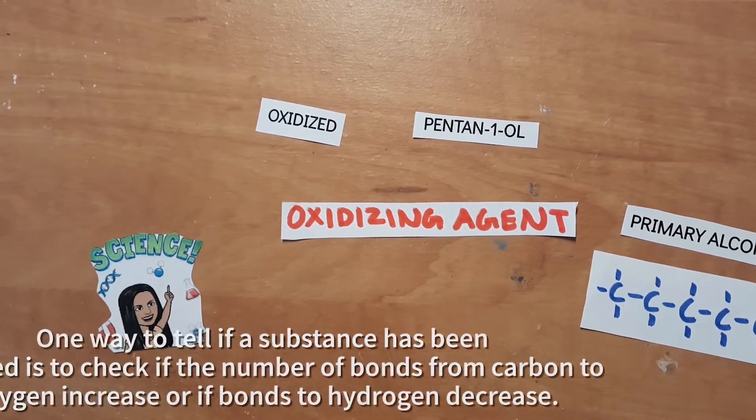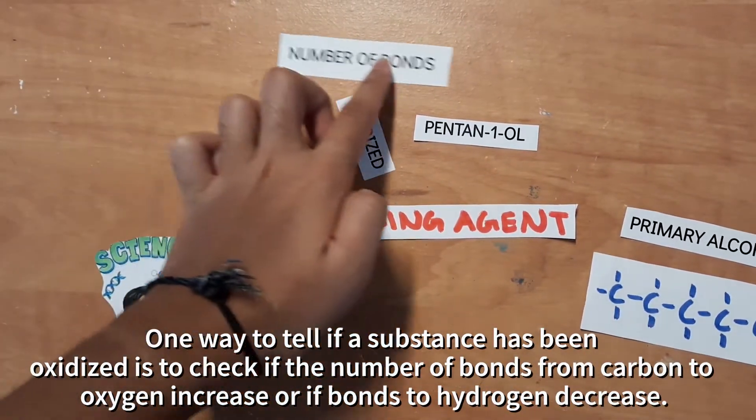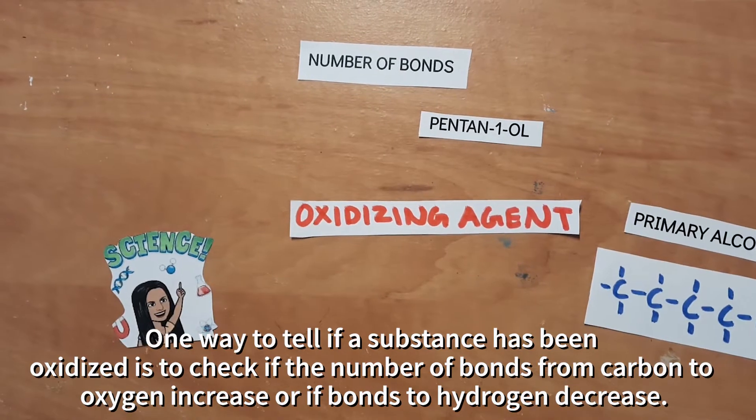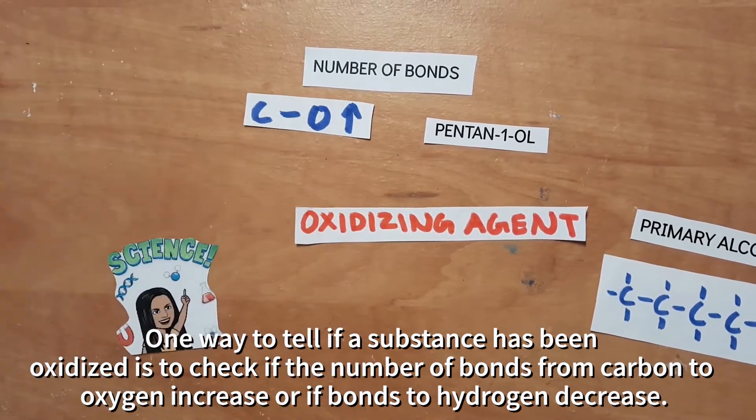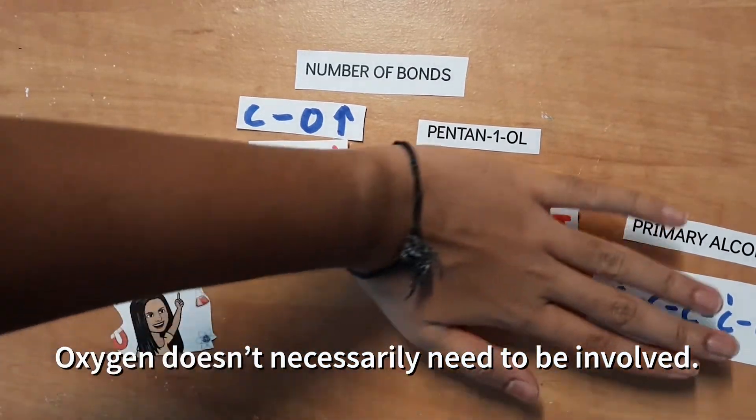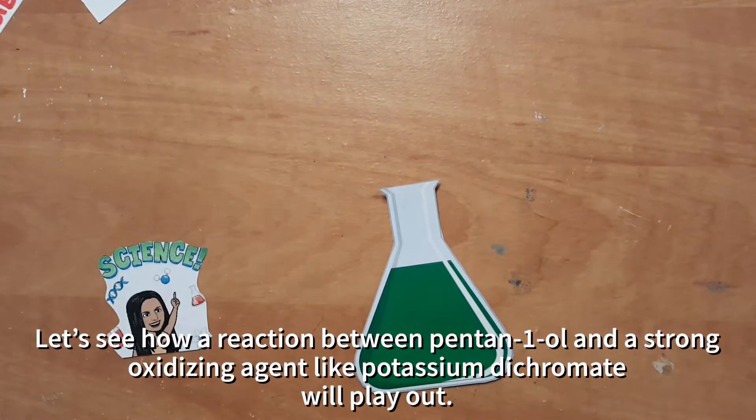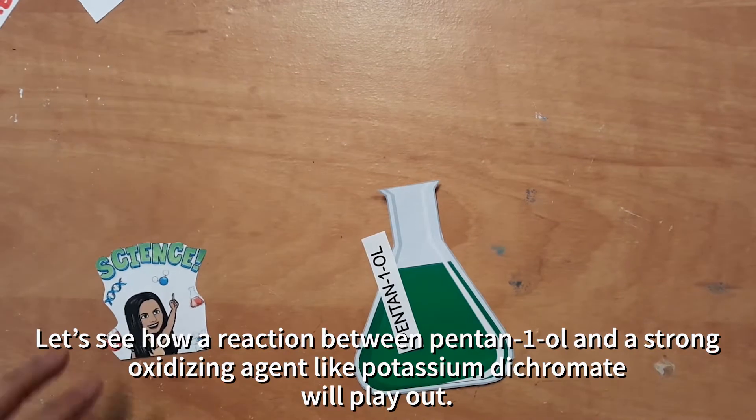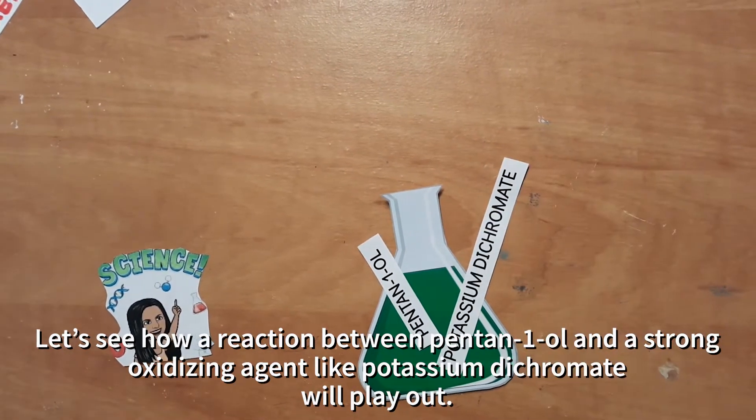One way to tell if the substance has been oxidized is to check if the number of bonds from carbon to oxygen increase, or if the bonds from carbon to hydrogen decrease. Oxygen doesn't necessarily need to be involved. So let's see how a reaction between pentan-1-OL and a strong oxidizing agent like potassium dichromate will play out.